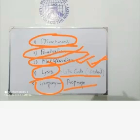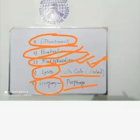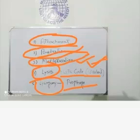وہ phage جو host کے DNA میں incorporate کر جاتا ہے اسے prophage کہتے ہیں۔ وہ host کے DNA میں موجود تو ہے لیکن multiplication نہیں کر رہا — بالکل چپ کر کے body کے اندر رہتا ہے۔ جب host کی normal reproduction ہوتی ہے تو وہی virus جو اس کے DNA میں موجود تھا اگلی نسل میں منتقل ہو جاتا ہے۔